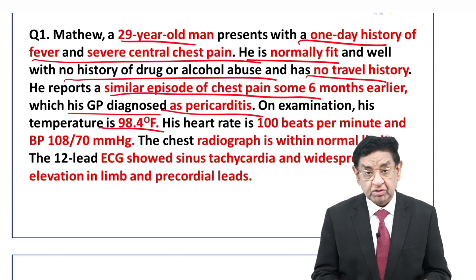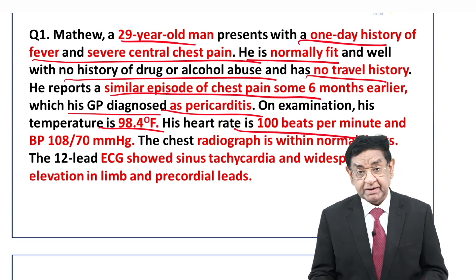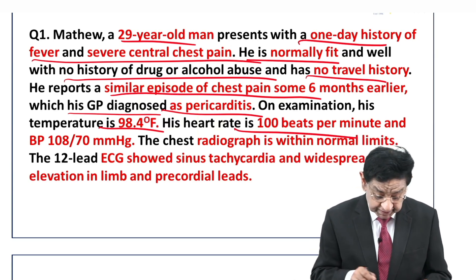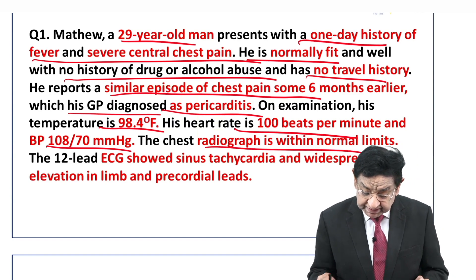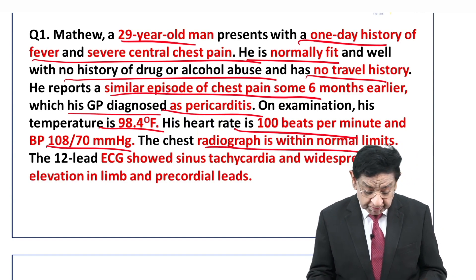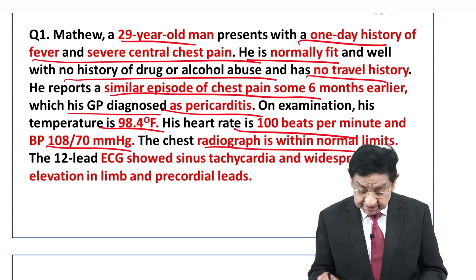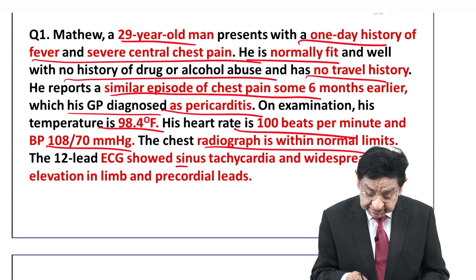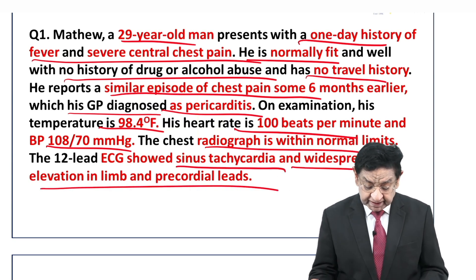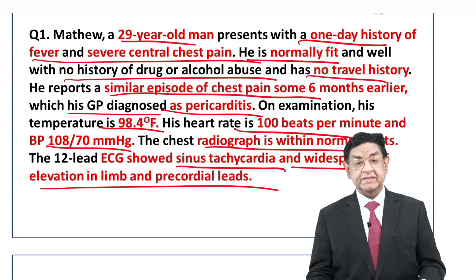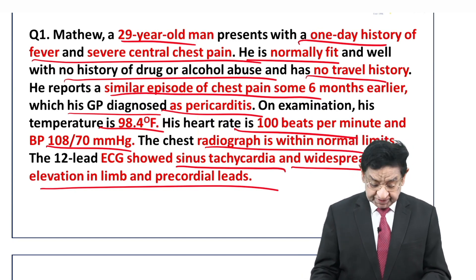Fever temperature is normal. Heart rate is 100 per minute. BP is normal. Chest X-ray is normal. When the ECG was done, there was sinus tachycardia and widespread ST elevation in the limb and the pericardial leads — that means there was generalized elevation.